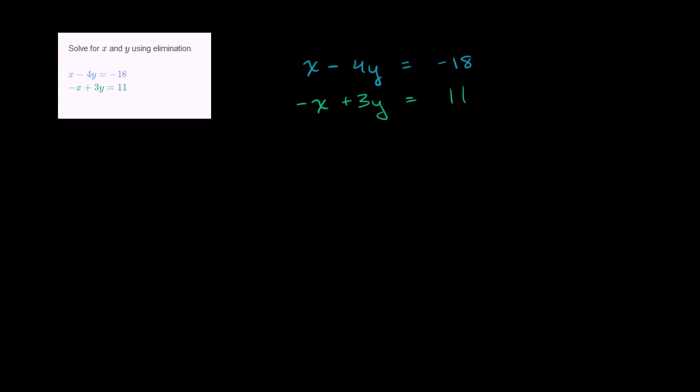So the thing that jumps out at my brain, we want to eliminate one of the variables. And we have an x here and we have a negative x right over there, so those would cancel each other out very well. So let's do that. Let's add negative x plus 3y to the left-hand side of x minus 4y. And then we can add 11 to the right-hand side, because as the second statement shows, this is equal to this.